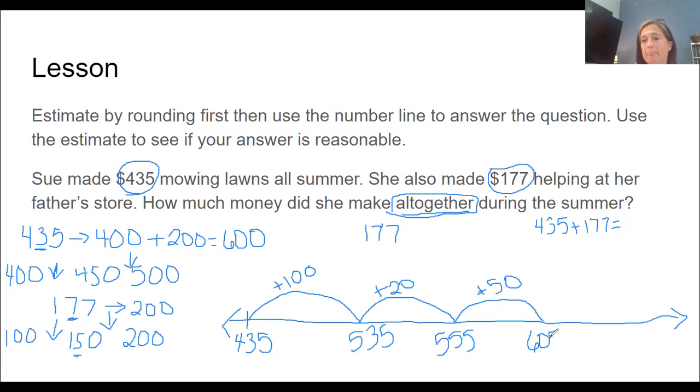And then what I have left, because here I added the 70, 50 plus 20 is 70. I now have this 7 left. So I'm going to add 5 because I feel like 7 might be too hard for me. So I'm going to add 5, which takes me to 610. And then I'm going to add two more because that's what I have left to make 7. And that is 612.